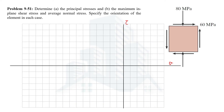Looking at the current state of the element, on the x-face we can see that there is no normal stress acting but there is a shear stress of 60 MPa. Since the x-coordinate represents normal stress, the normal stress is 0 on this face. The shear stress is 60 MPa, but we must keep in mind the direction. The shear stress is acting in the anti-clockwise direction, and since we define clockwise as positive and anti-clockwise as negative, this gives us negative 60.